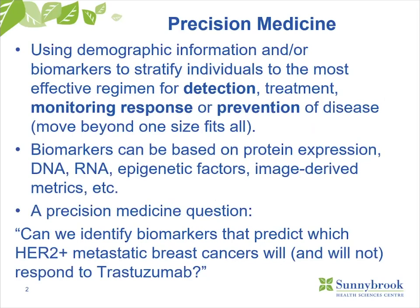First of all, I want to expand slightly on the definition of precision medicine, at least the way I see it. That is using information — a combination of demographic information and biomarkers — to stratify individuals to the most effective regimen, not just for treatment, which is the traditional view, but also to optimize how we detect disease, how we monitor response to therapy, and how we develop preventive strategies for disease. Initially our interest is in cancer, but these ideas extend right across the spectrum of health, getting away from the idea that one size fits everybody.